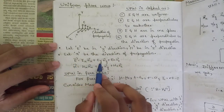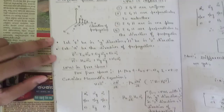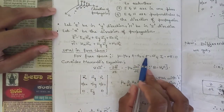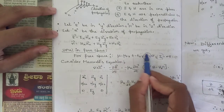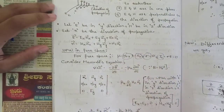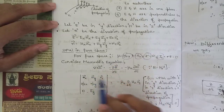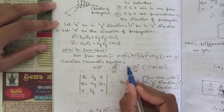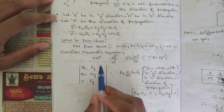In general, E = Ex·ax + Ey·ay + Ez·az, and similarly for H. For a uniform plane wave in free space, the conditions are μ = μ₀, ε = ε₀, σ = 0, and conduction current density Jc = σE = 0. Now consider Maxwell's equation: ∇×E = −∂B/∂t. Since B = μ₀H in free space, this becomes ∇×E = −μ₀ ∂H/∂t.